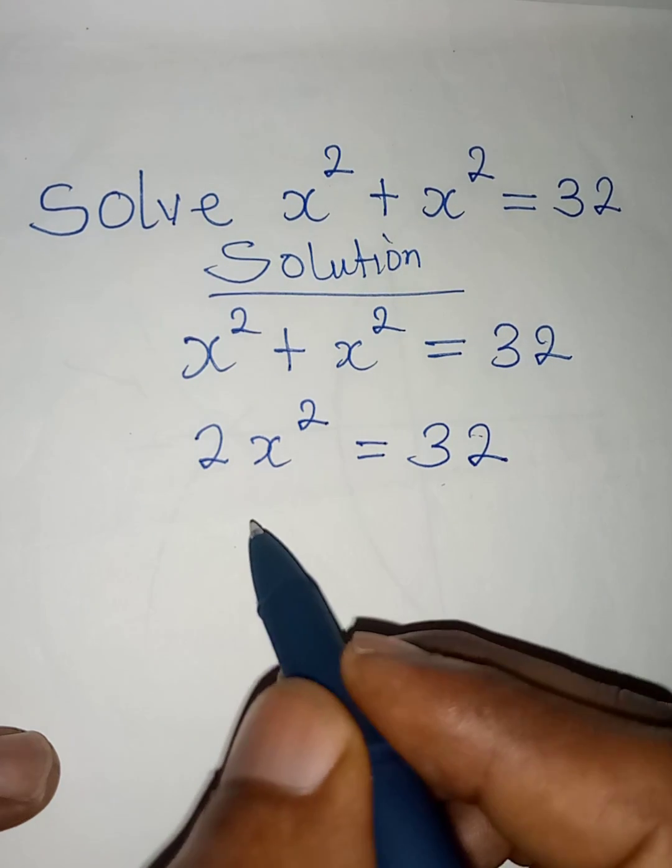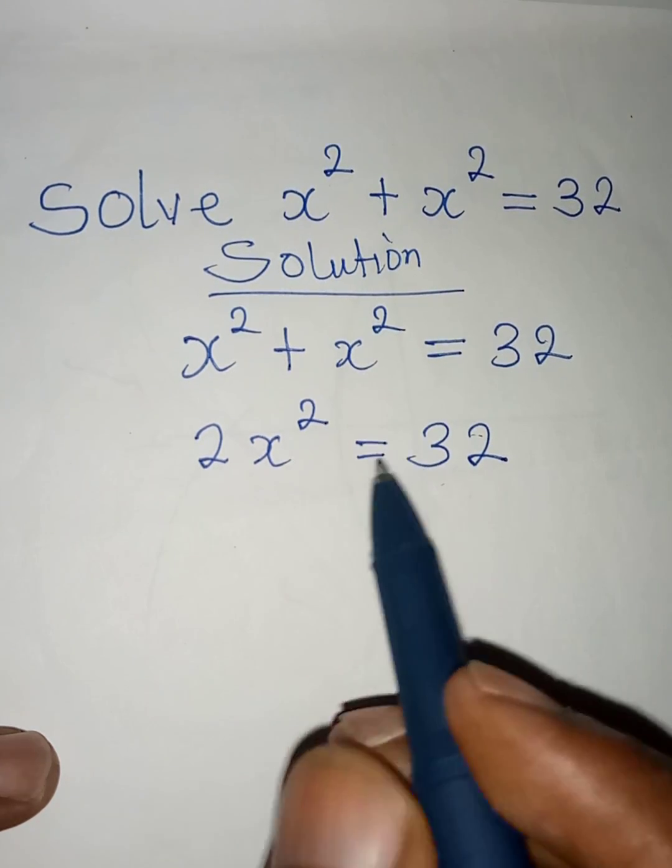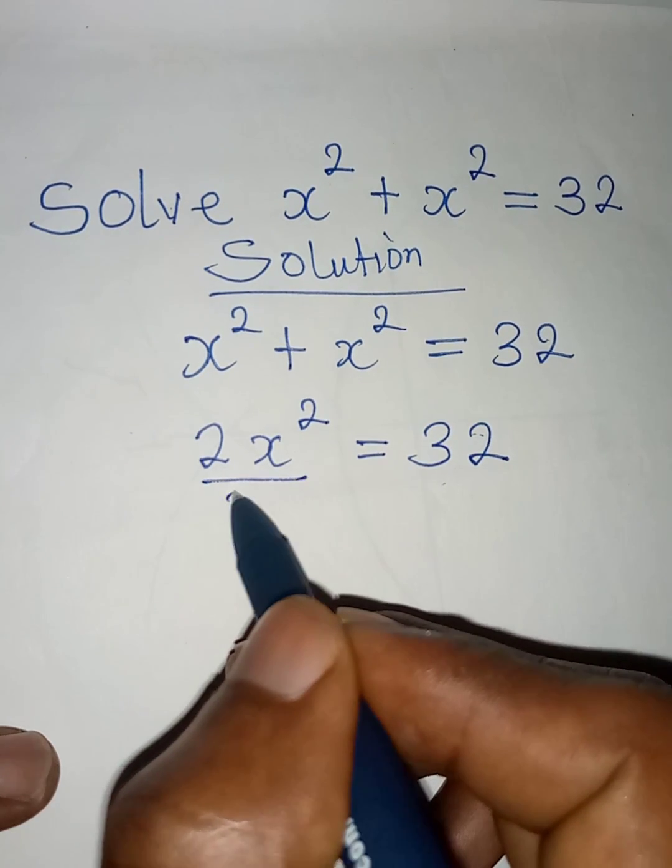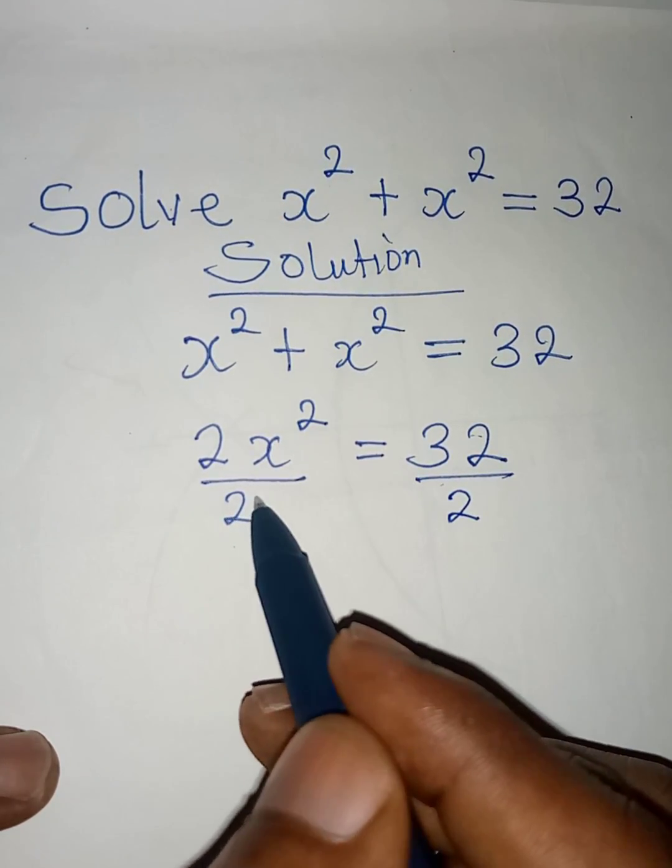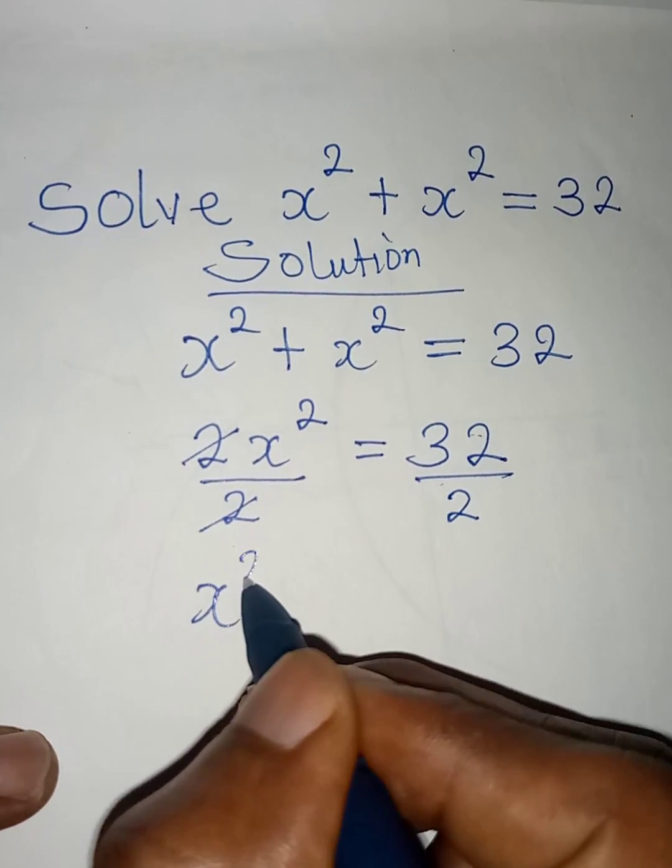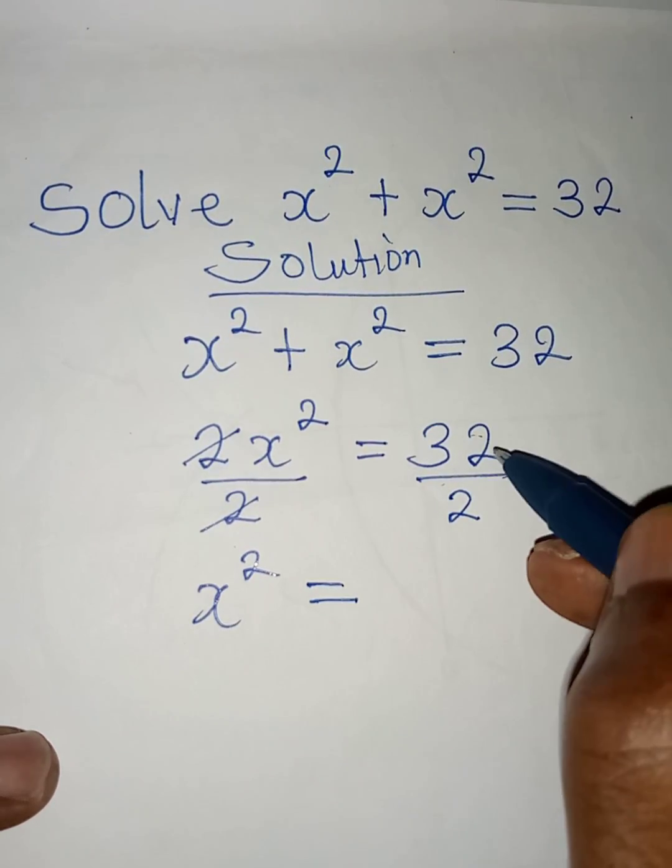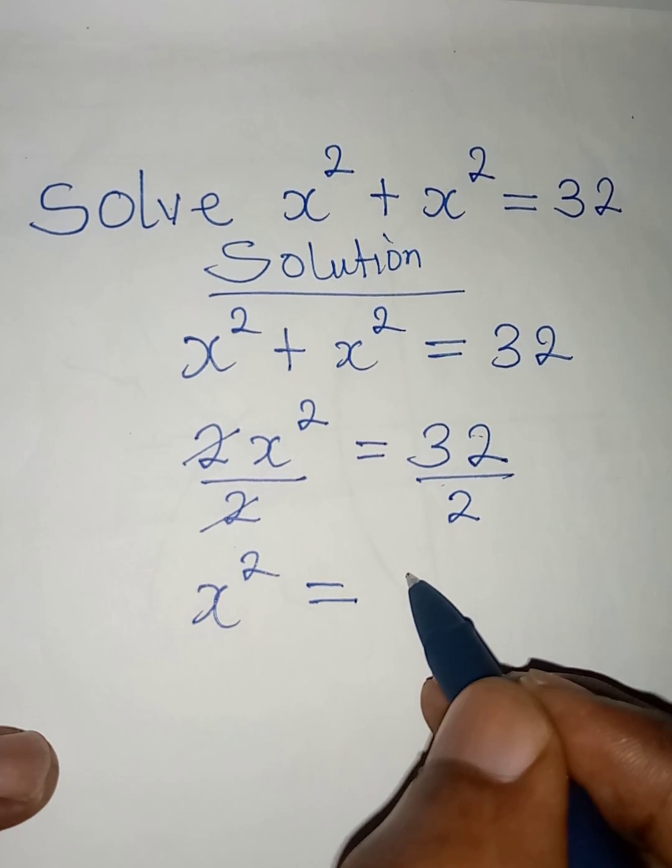The next thing is to divide both sides by 2 so that x squared will remain. Divide this by 2 and then divide this side by 2. 2 can cancel 2 and then x squared will be equal to 32 over 2 and that will give us 16.